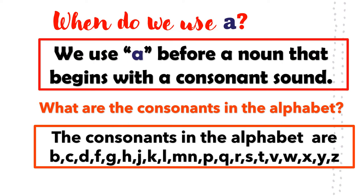When do we use A? We use A before a noun that begins with a consonant sound. The consonants in the alphabet are B, C, D, F, G, H, J, K, L, M, N, P, Q, R, S, T, V, W, X, Y, and Z.